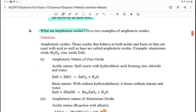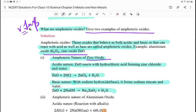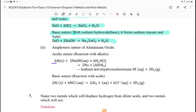Question 6: What are amphoteric oxides? Very important - give two examples of amphoteric oxide. Remember aluminum oxide and zinc oxide. Amphoteric oxides are those oxides that behave as both acidic and basic, that can react with acid as well as base. Aluminum oxide and zinc oxide are amphoteric oxides. Amphoteric nature of zinc oxide: ZnO reacts with hydrochloric acid forming zinc chloride and water.